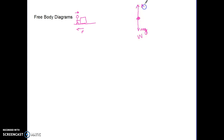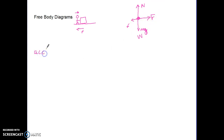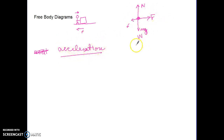The normal force acts upward and weight acts downward — drawn the same size because the object isn't accelerating vertically. There's an applied force (F) and a frictional force (lowercase f). This free body diagram shows acceleration because the applied force to the right is bigger than the frictional force to the left, meaning there's net acceleration to the right.